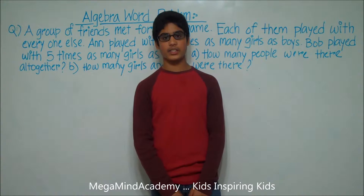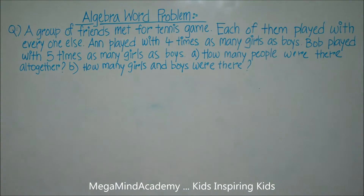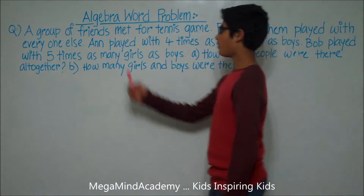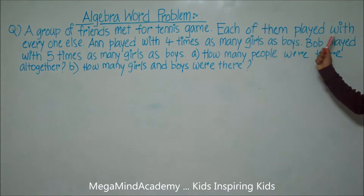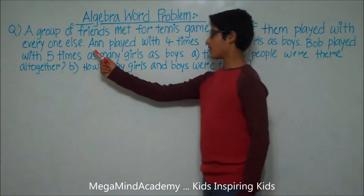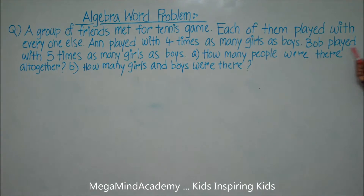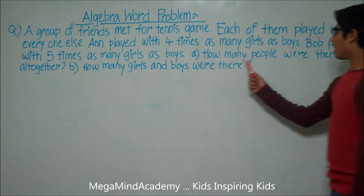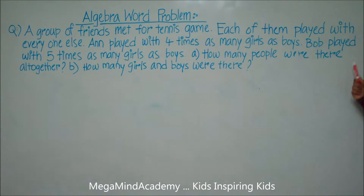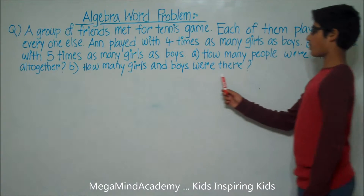Today we're going to learn about algebra word problems. Let's say we have a problem: a group of friends met for a tennis game. Each of them played with everyone else. Ann played with four times as many girls as boys. Bob played with five times as many girls as boys. Question A: How many people were there altogether? And question B: How many girls and boys were there?